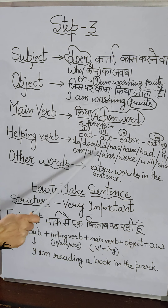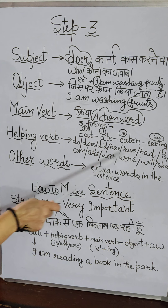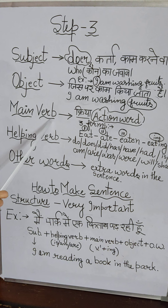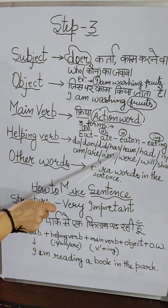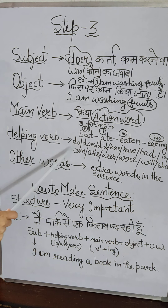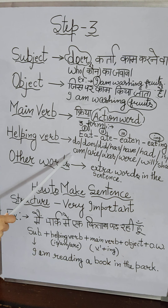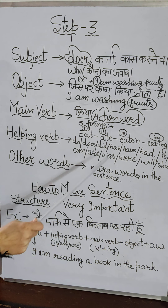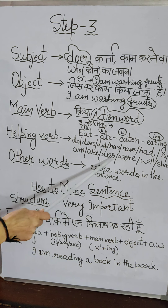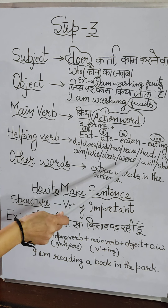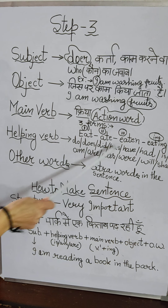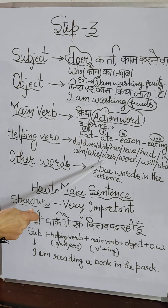These are the helping verbs and these are the main verbs — kriya. The helping verbs help us to make sentences different. When we make a present sentence, we use do, does, is, am, are. For past, we use did, had, was, were. For future, we use will or shall. These verbs and their use I have told you in the previous video.